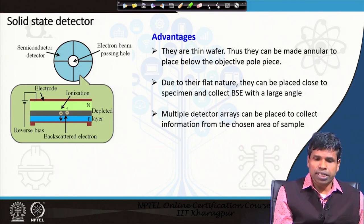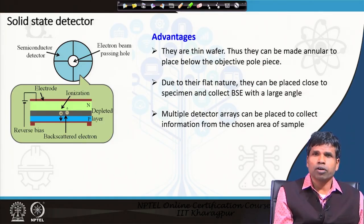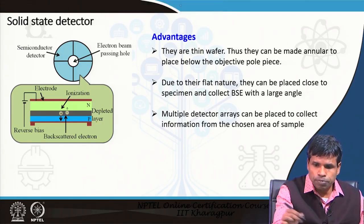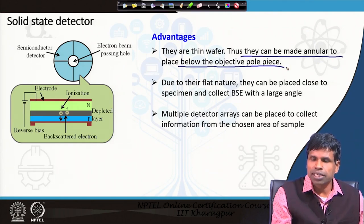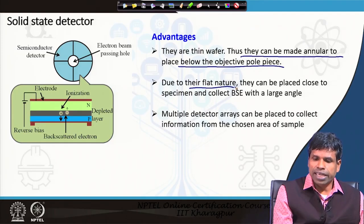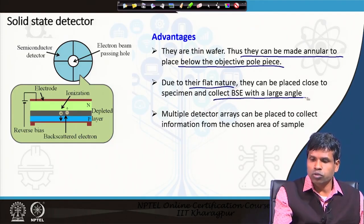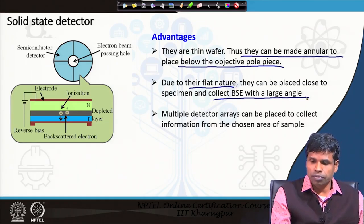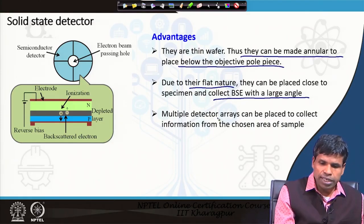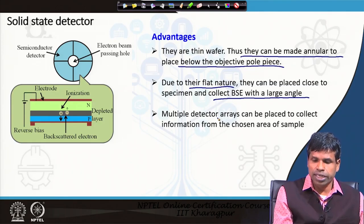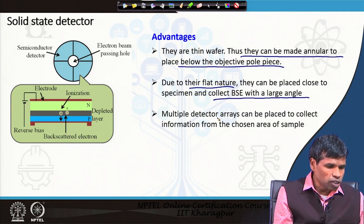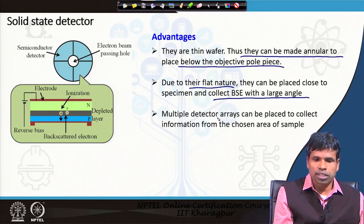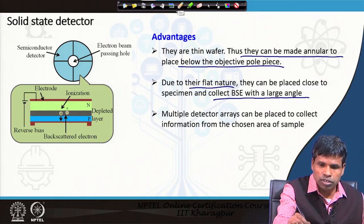These detectors have certain advantages because they are semiconductor wafers in thin wafer form. They can be made annular to be placed below the objective pole piece, and they can be placed close to the specimen to collect backscattered electrons over a large solid angle of almost 2π. Multiple detector arrays can be placed on the detector to collect information from a chosen area of the sample. This solid state detector is what is used in present day scanning electron microscopes.